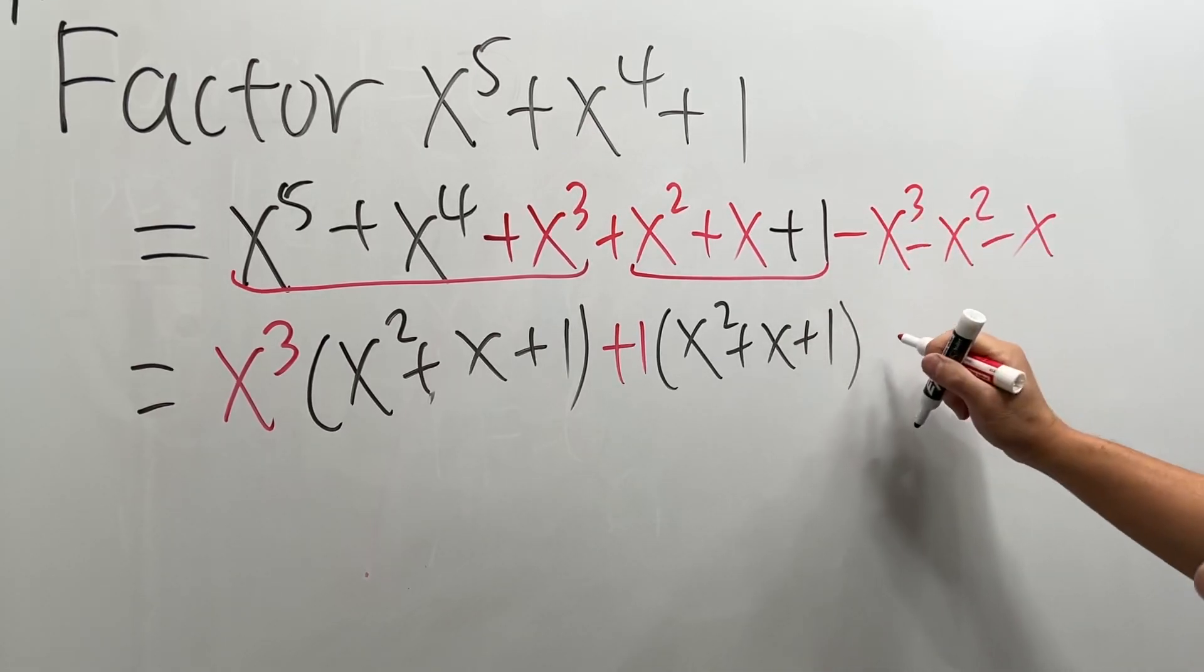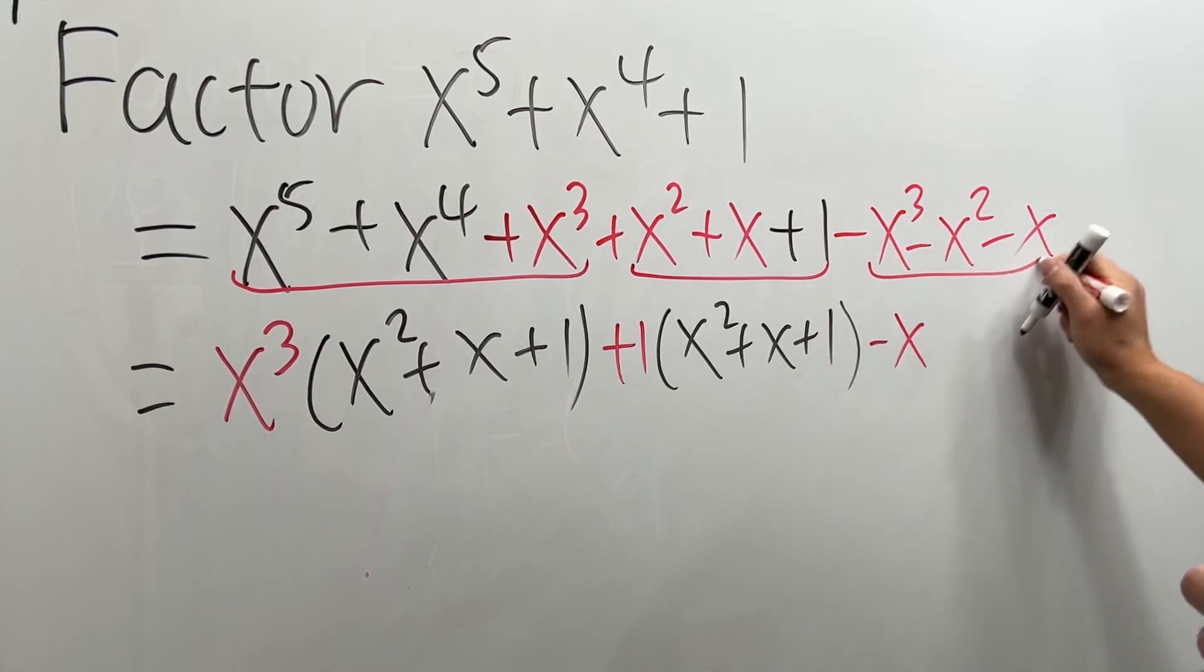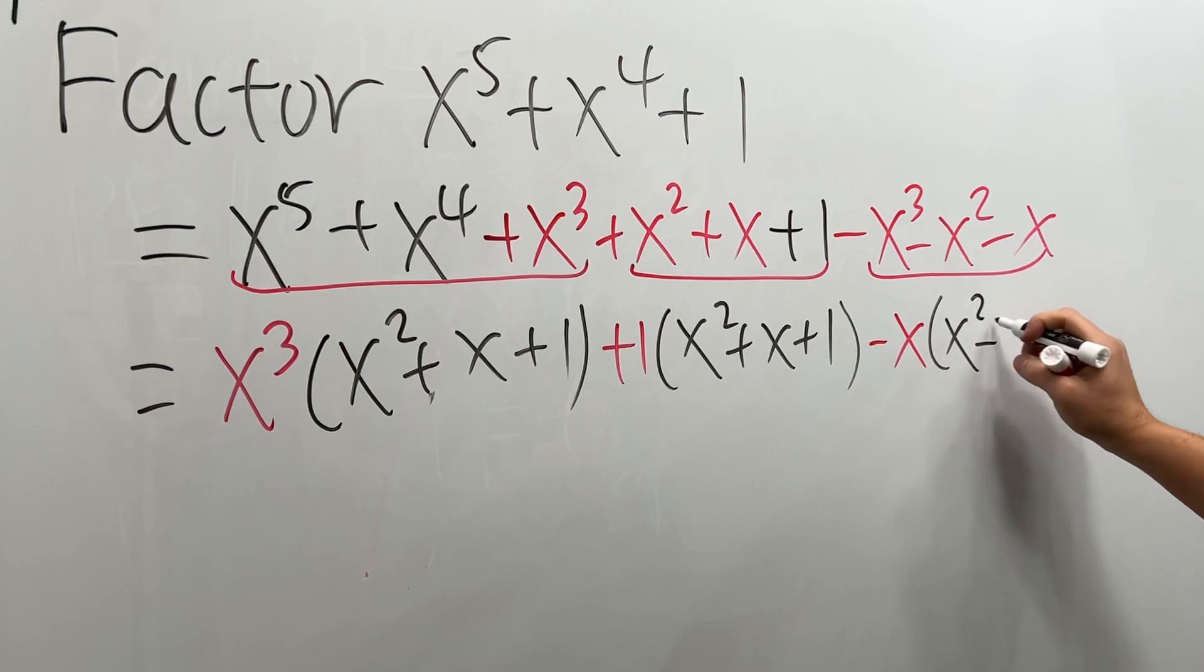And then for the last part right here, let's factor out negative x. And then you will see that this right here will be x squared plus x plus 1.